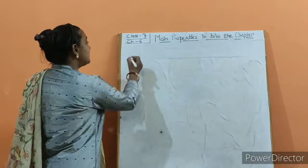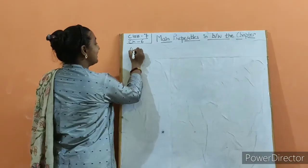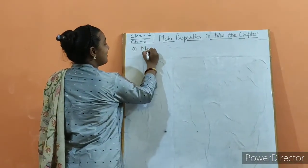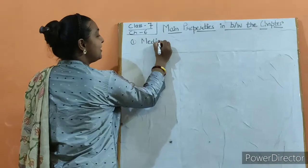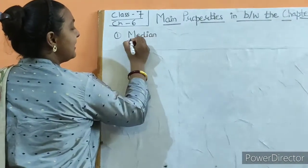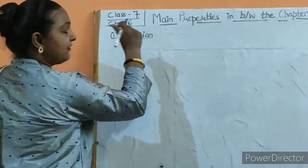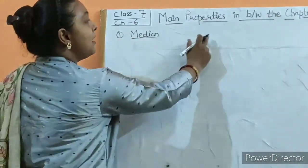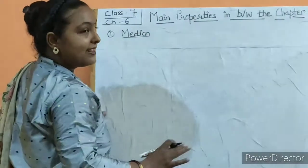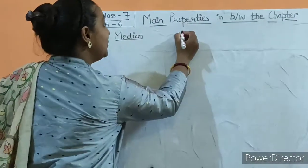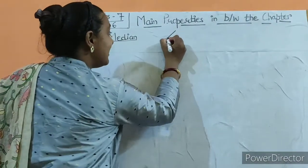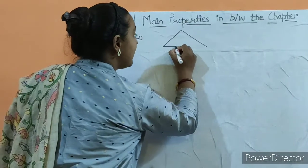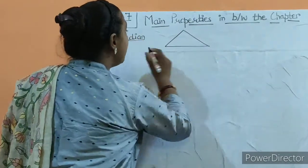Our first property is median. Median we have discussed before, so we will give this video as a sub-up video. Median is going on the chapter of the triangle, so all of your properties are related to the triangle. Suppose there is a triangle here.